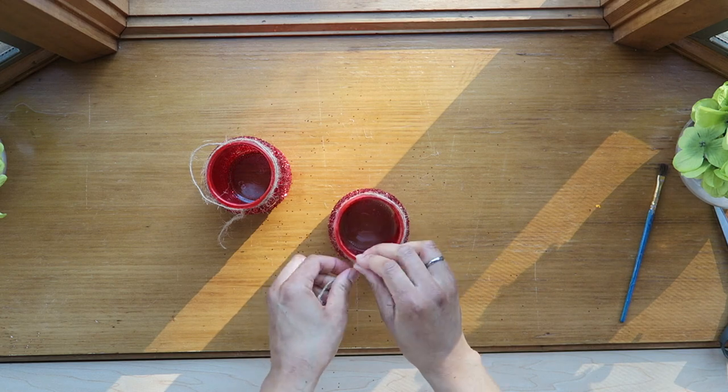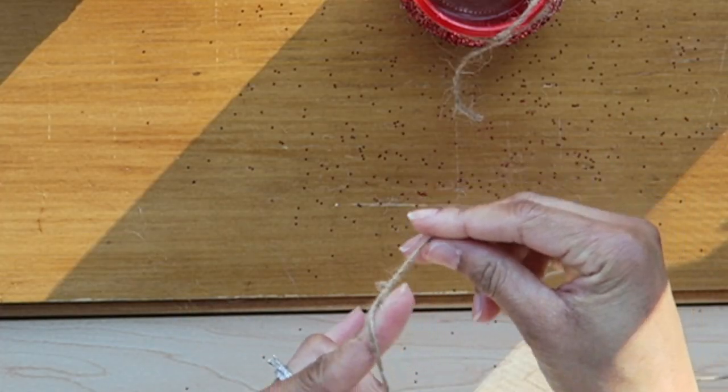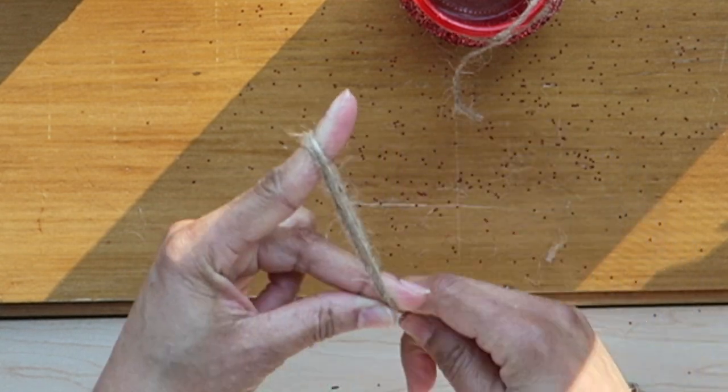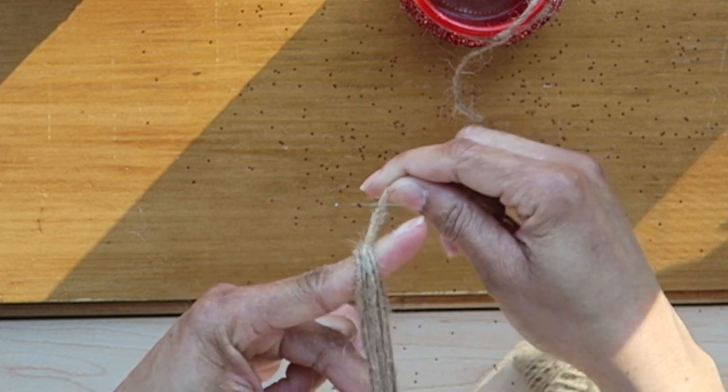Then I used that twine and wrapped it around two fingers so that I could create a bow out of it. I think I wrapped this around about five times, so there were five loops on both sides.